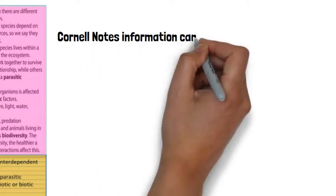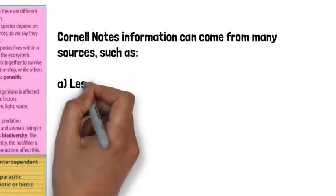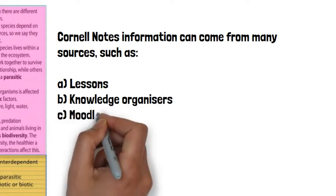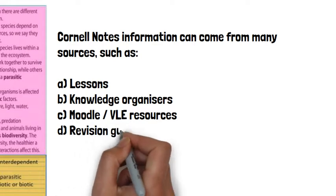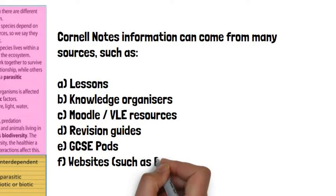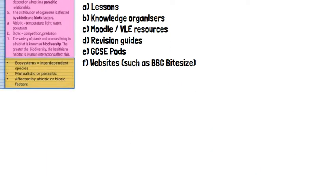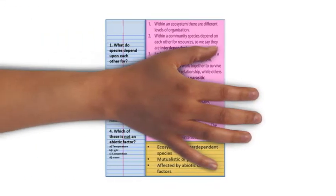A reminder that your Cornell notes information can come from many different sources. These include lessons — you can make Cornell notes during the course of a lesson. Your knowledge organizers are perfect for making Cornell notes. You've also got resources on Moodle and the VLE, revision guides that you may have bought, and of course GCSE Pod and websites such as BBC Bitesize. Revision guides are a perfect way of creating Cornell notes outside of lessons.